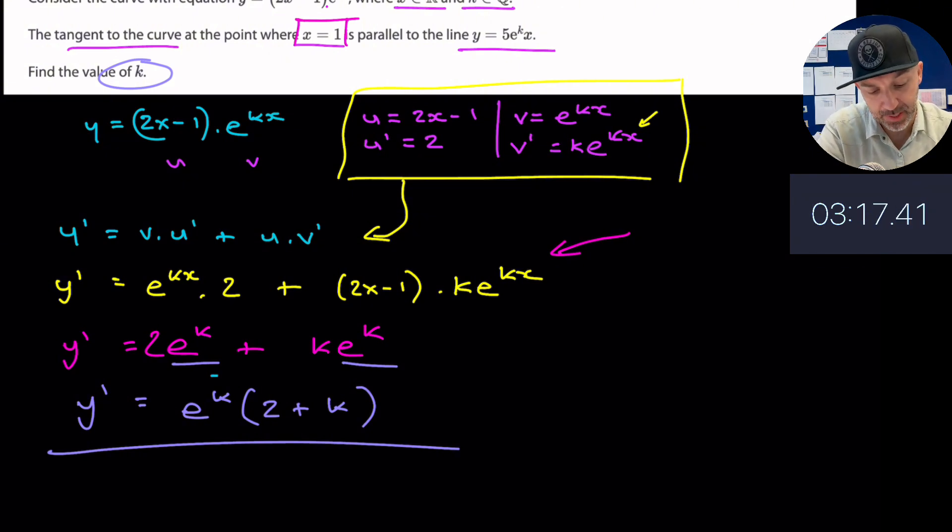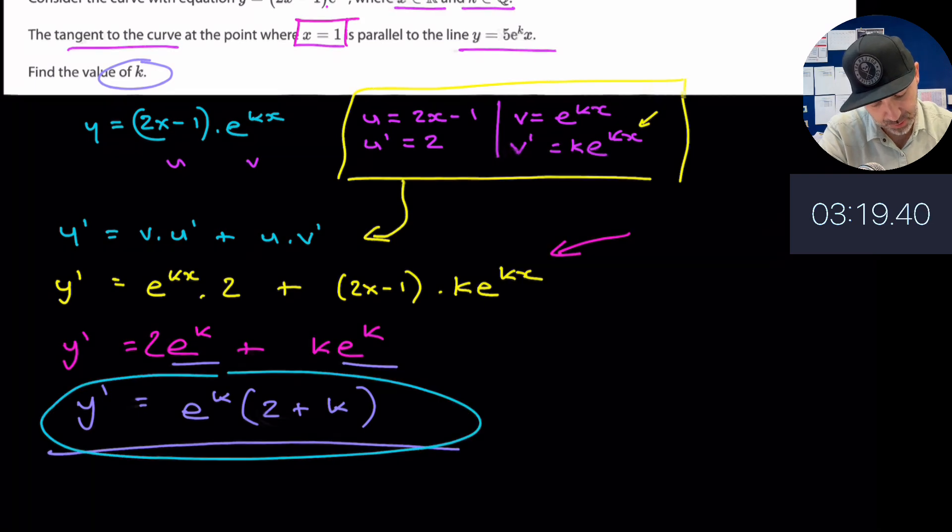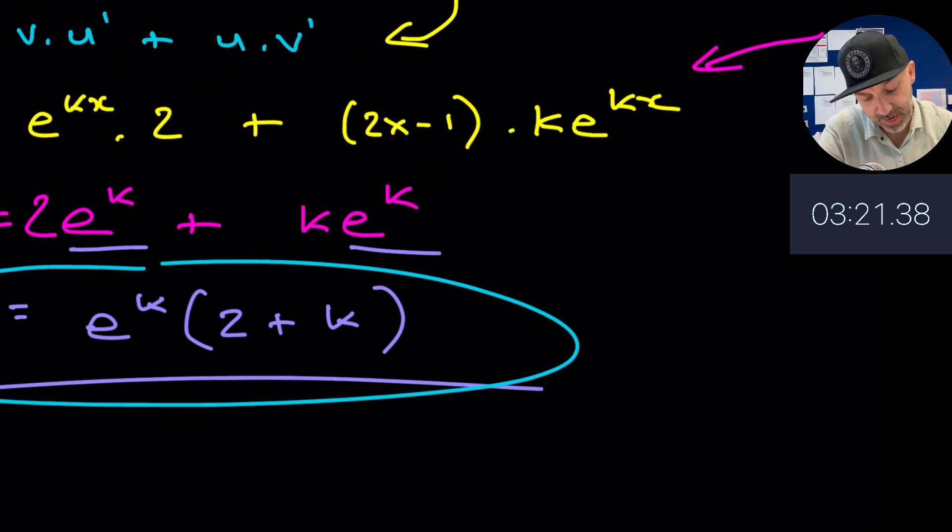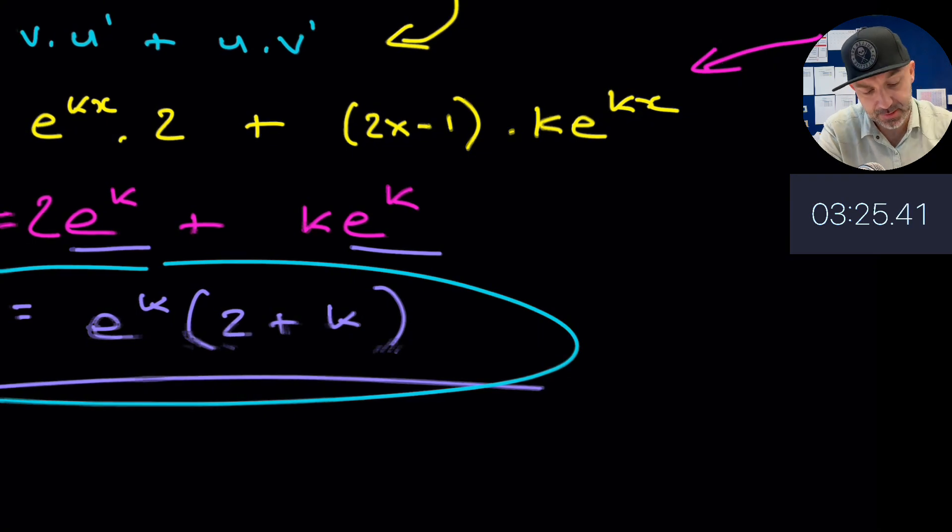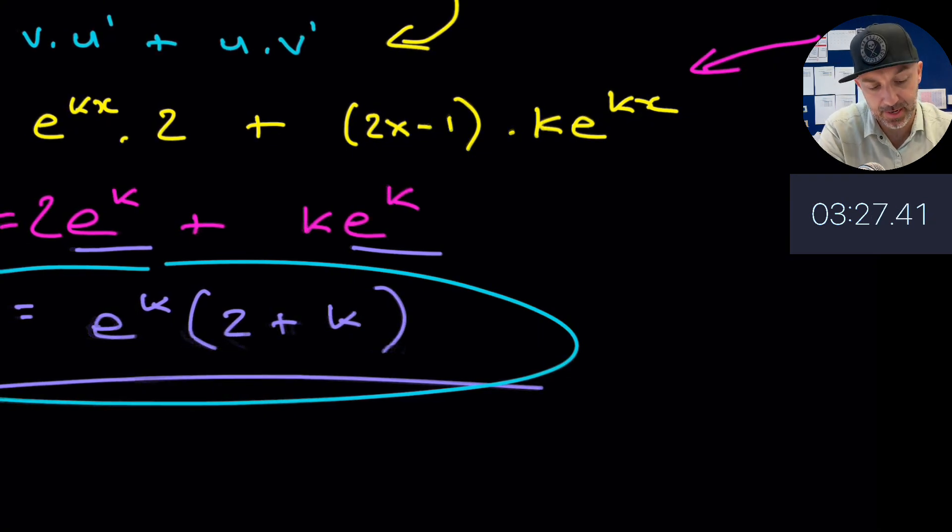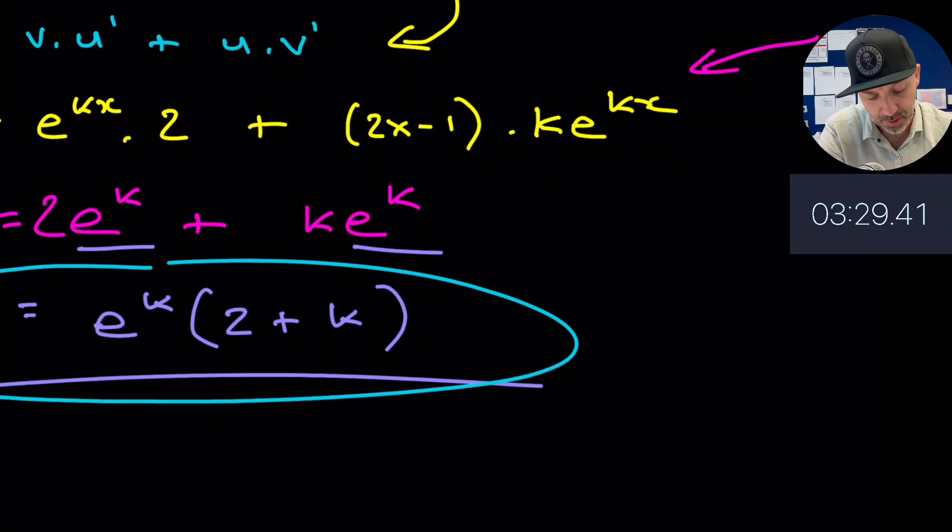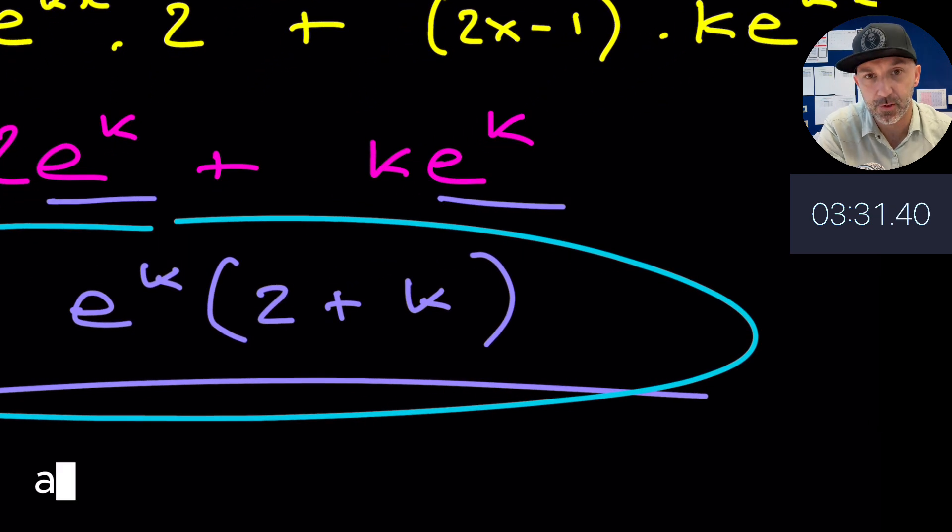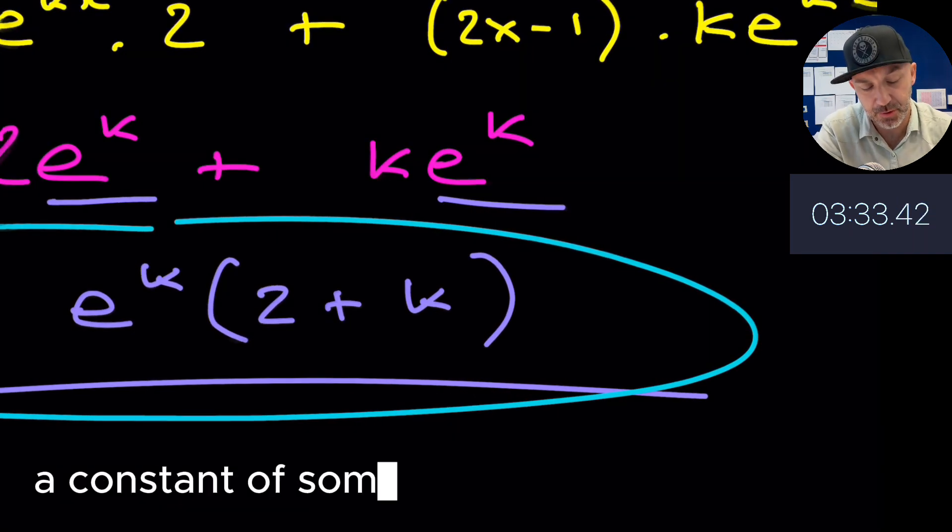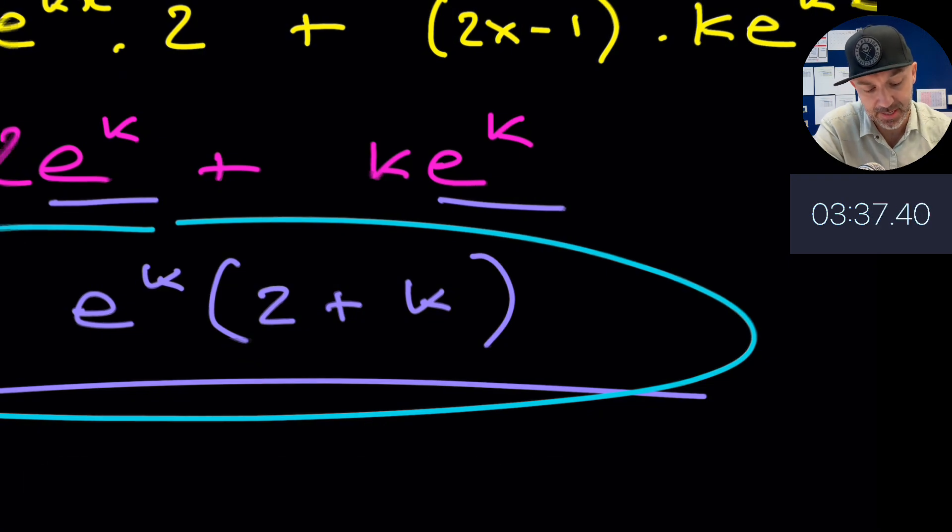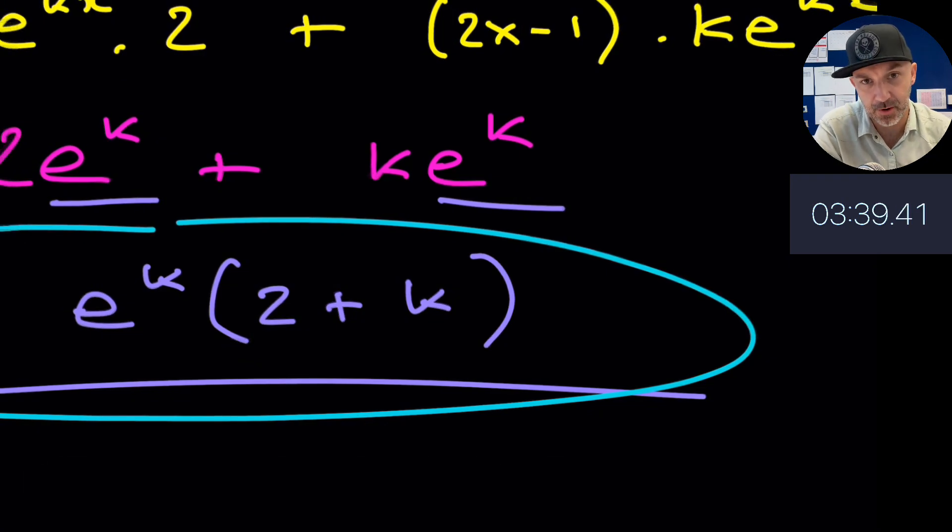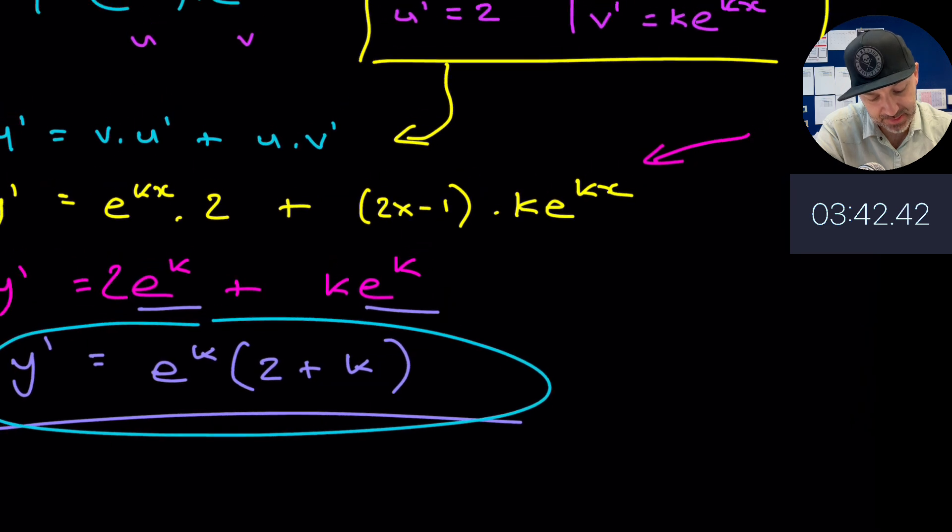This part is I think one of the trickier parts of the question. So we know now that the gradient at this point x equals 1 is equal to e to the k times (2 + k). Now it does say in the question that k is a rational number, so this on the right here, even though it looks complicated, is just a numerical value. We don't know what that value is because we don't know what k is, but it is just a numerical value. So that is the value of the gradient.